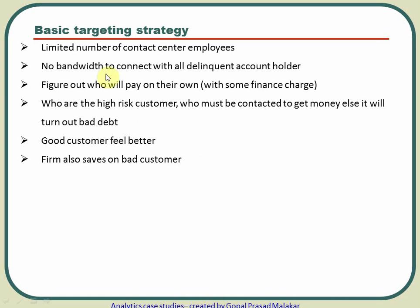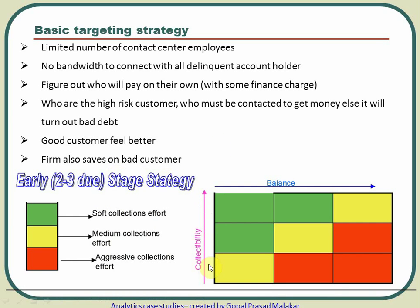Here is an example with two to three early-stage scenarios. Based on collectability and balance, customers with high collectability and low balance need no heavy collections effort — an SMS is sufficient. Customers carrying a huge balance but with low collectability need to be directly contacted. With limited resources, you target only the high-risk red area, enabling you to contact almost all high-risk customers and collect money efficiently. That's where lies the beauty and applicability of analytics.